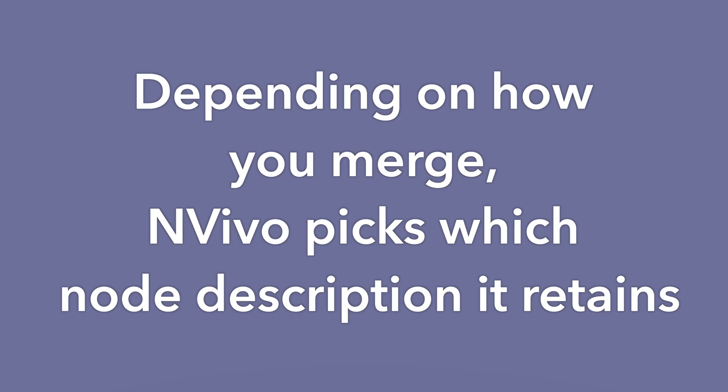With asynchronous, there are some quirks around how the merge process handles certain aspects in NVivo. One of the quirks is around the node description — depending on how you merge, NVivo picks which one it retains.